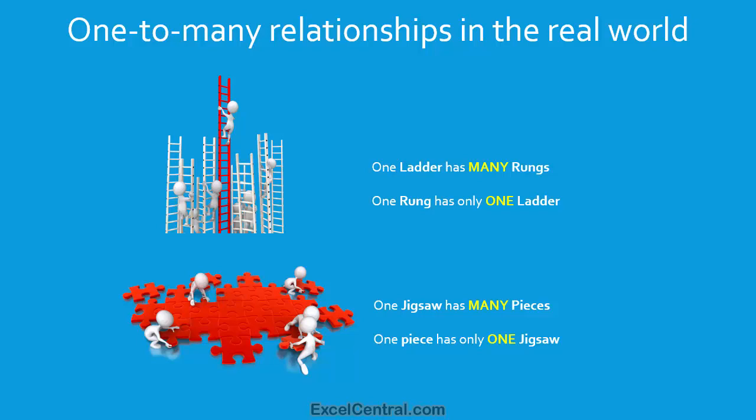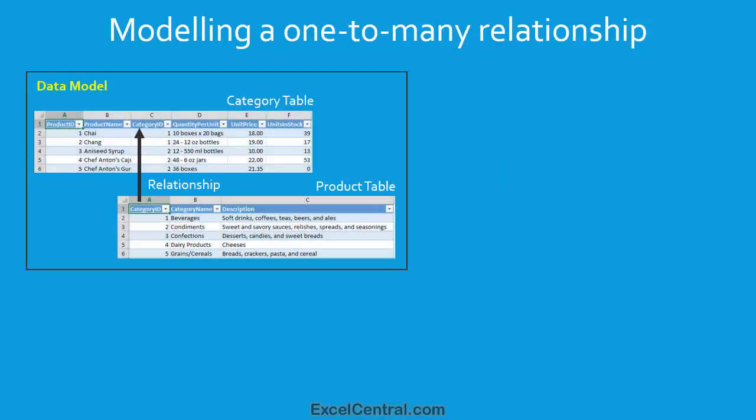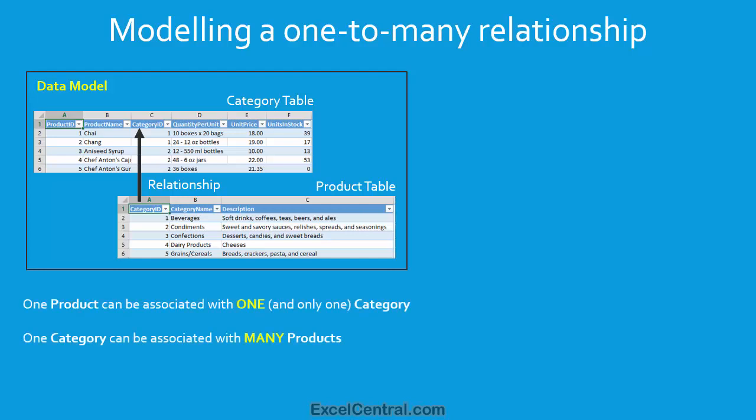You've already modeled a one-to-many relationship within an Excel data model in Lesson 6-2. That was a one-to-many relationship between the Category table and the Product table. Specifically, one product can be associated with one category, and one category can be associated with many products. This relationship was modeled by associating the CategoryID primary key in the Category table with the CategoryID foreign key in the Product table.